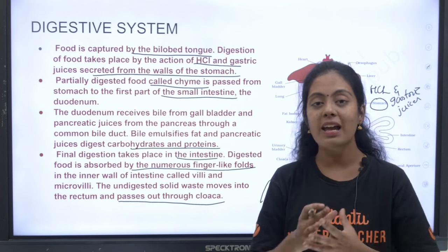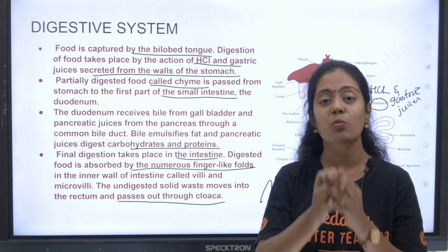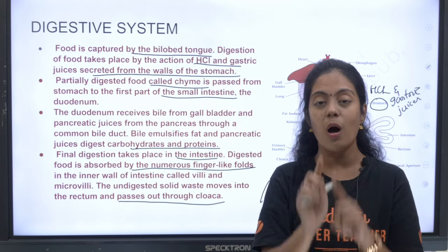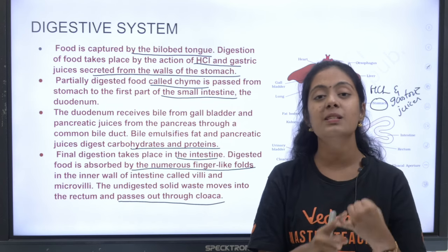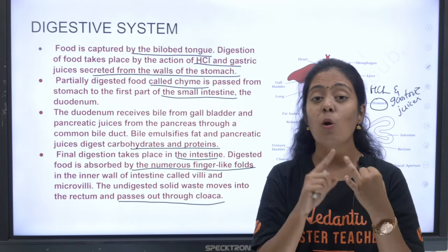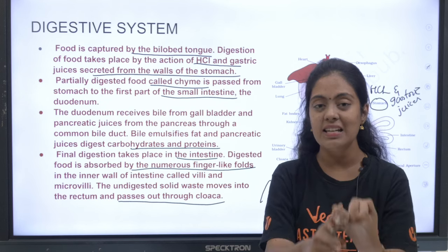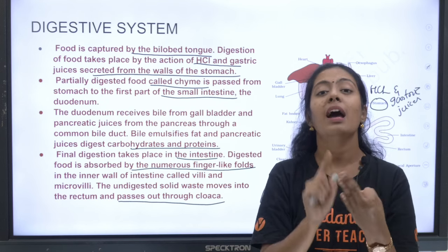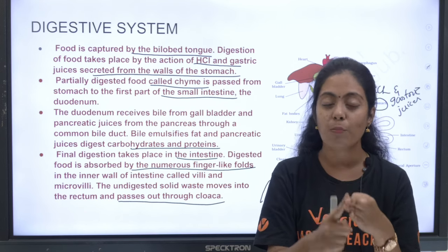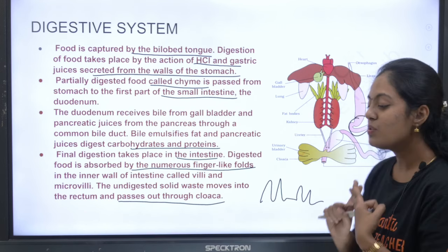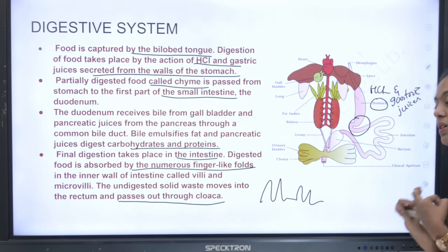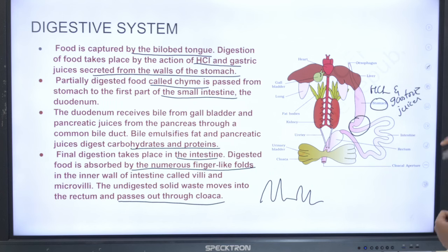The digested food moves into the rectum and passes out through the cloaca. The cloaca is a single common opening for the digestive system, excretory system, and reproductive system.